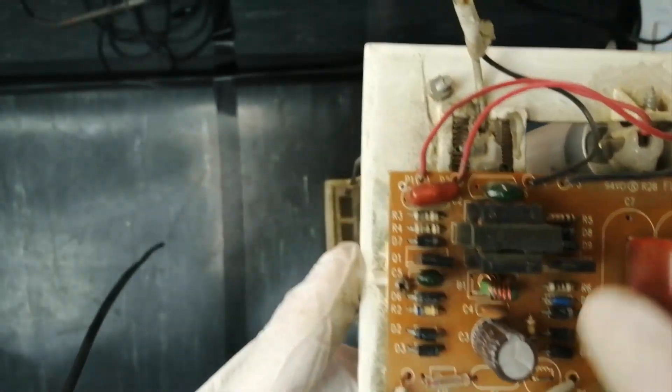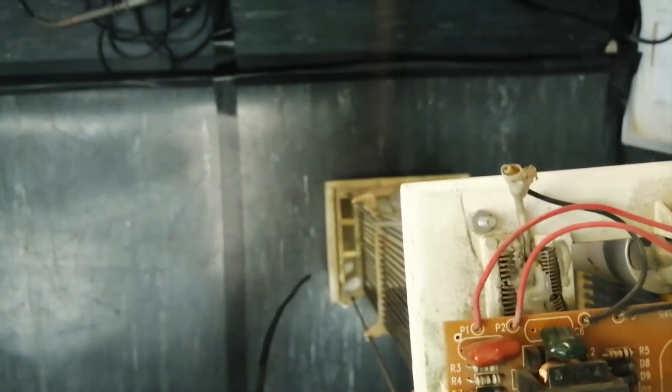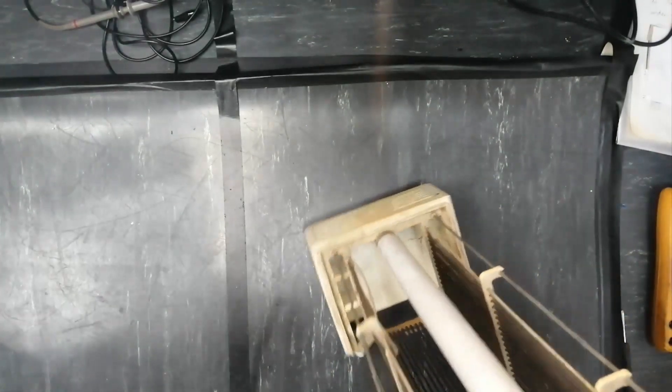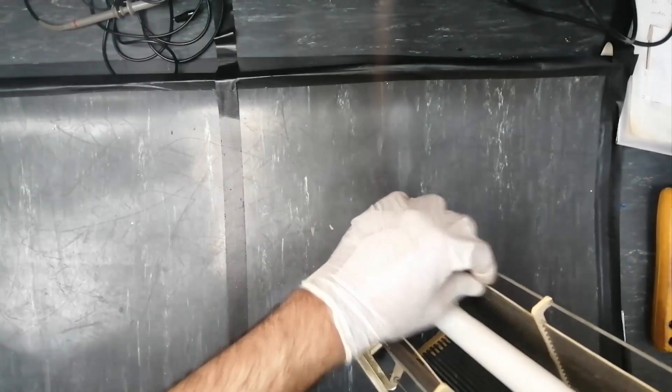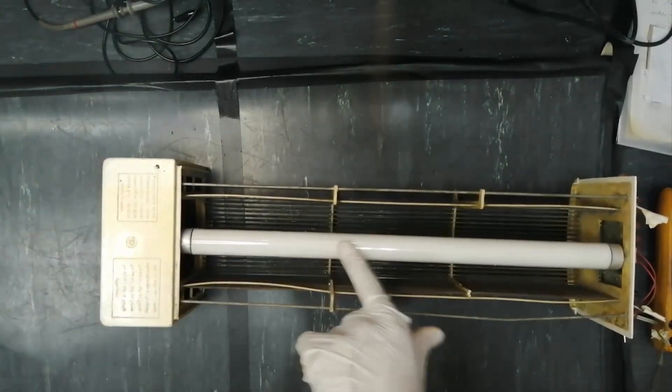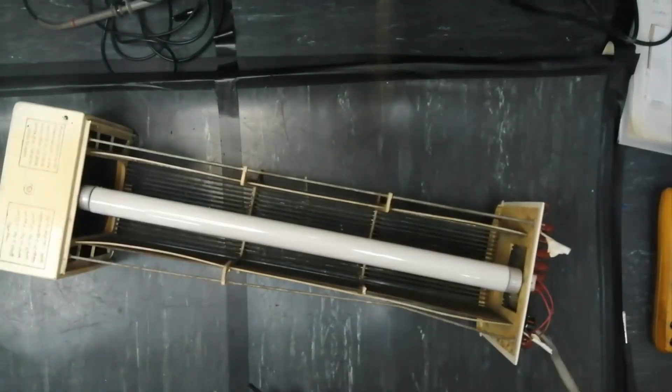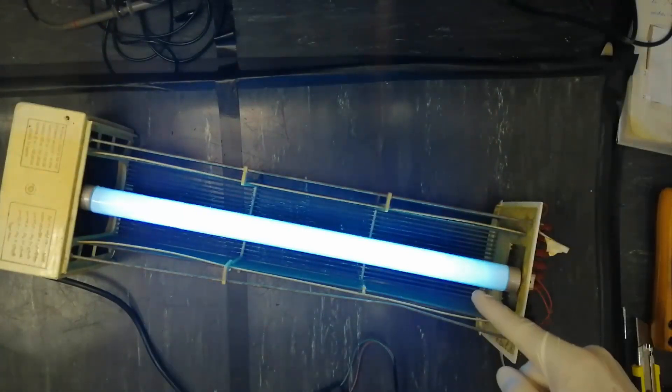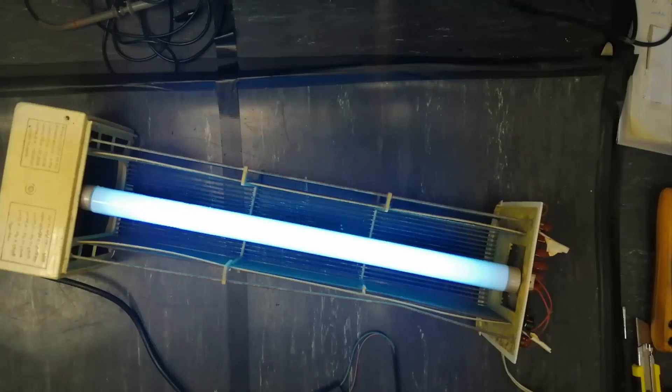First of all we will apply power. If we check here we have this bridge rectifier, after that we have this driver's transformer and output capacitors. These two lines are connected to the tube lamp, these two lines are connected to the second heater, second side filament. So the tube lamp is working. Now how we can test the high voltage section?